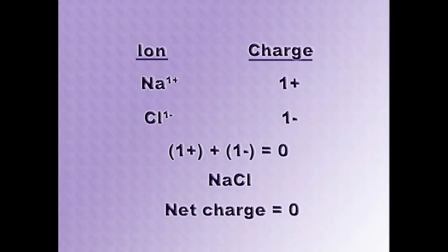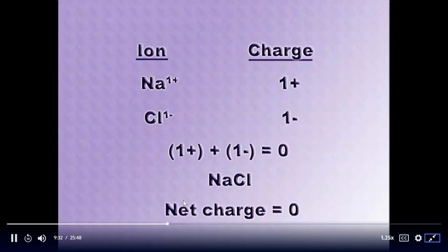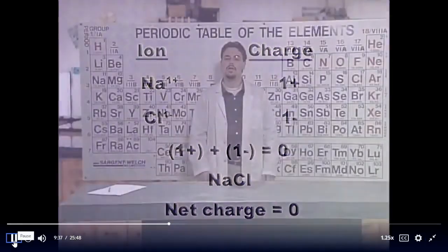One more thing to note: the number precedes the sign. Although we say the charge on the sodium ion is positive one, we write it as 1+. Although we say the charge on the chloride ion is negative one, we write it as 1−. This is the conventional way of writing ion charges.